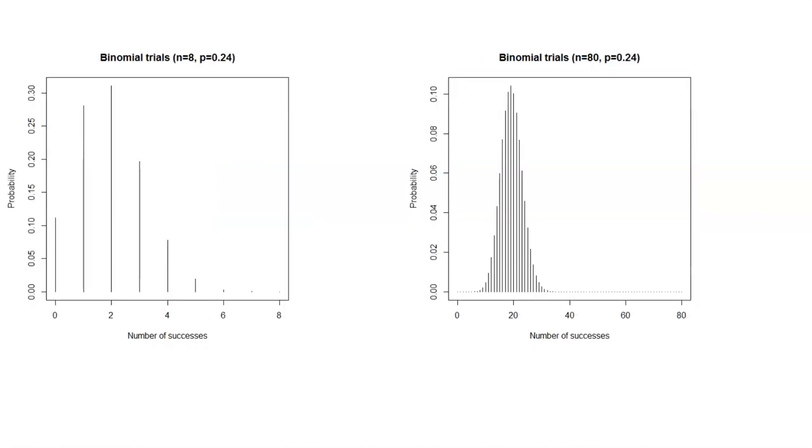Here's an example: the hazardous waste case. Remember, n equals 8 on the left and n equals 80 on the right. The probability of violation is the same, 0.24 for both graphs.